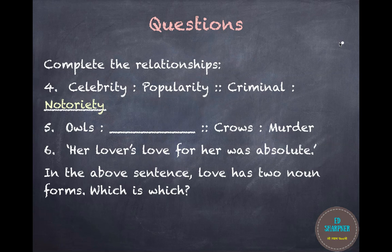The next relationship is: owls is to what, as crows is to murder? This is an example of collective nouns. A group of crows is called a murder. Similarly, a group of owls is called a parliament. This is something you just have to remember as part of vocabulary.